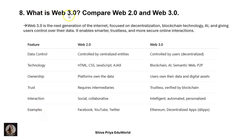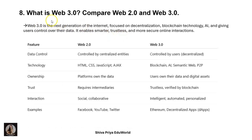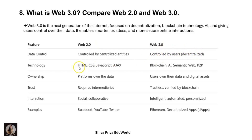The next question is: what is Web 3.0? Compare Web 2.0 and Web 3.0. Web 3.0 is the next generation of the internet, focused on decentralization, blockchain technology, AI, and giving users control over their own data. It enables smarter, trustless, and more secure online interactions. Comparing: Web 2.0 is controlled by centralized entities while Web 3.0 is controlled by users — decentralized. Technologies used in Web 2.0 are HTML, CSS, JavaScript, and AJAX; Web 3.0 uses blockchain, AI, semantic web, and peer-to-peer. In Web 2.0 the platform owns the data; in Web 3.0 users own their own data and digital assets. Web 2.0 requires intermediaries; Web 3.0 is trustless and verified by blockchain.